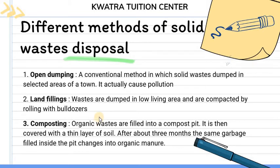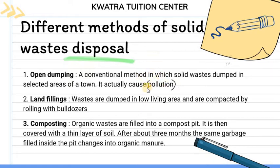The first method is open dumping. Open dumping is a very old method — it means that you dump your solid waste in any selected area. However, there is a lot of pollution from garbage pollution, so this is not a good method, but in urban areas this process can be followed.